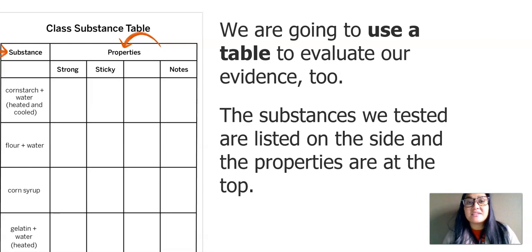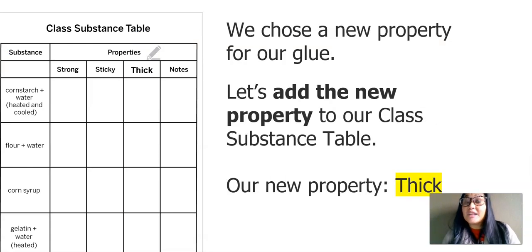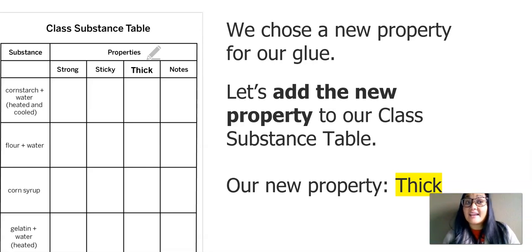The substances we tested are listed on this side and the properties are at the top. The substances we have are: corn starch and water that's been heated and cooled, flour and water, corn syrup, and gelatin and water that's heated. The properties we have so far are strong and sticky. In our last lesson, we were thinking and choosing a new property for our glue. Our new property is that it's thick.